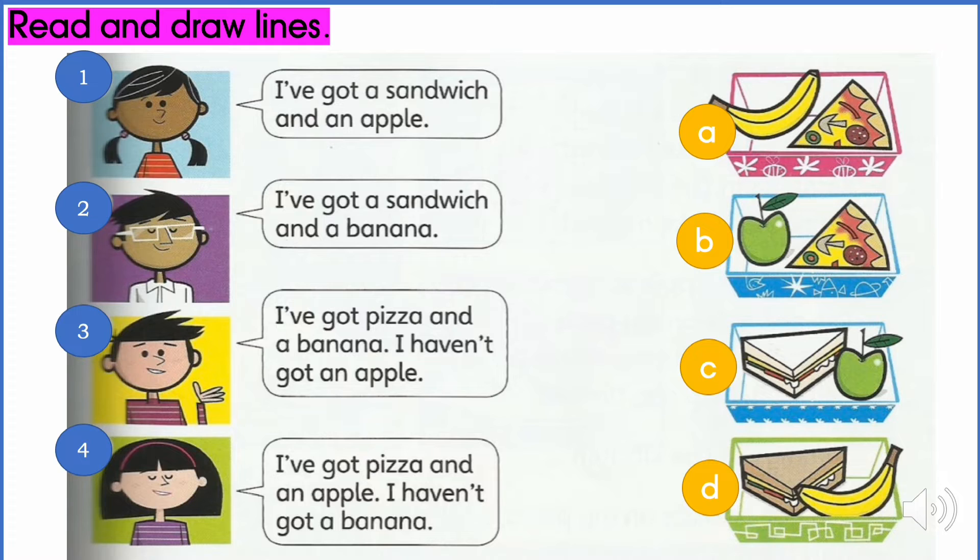Now let's do some exercises. Read and draw lines. Number one. I've got a sandwich and an apple. Which one is it? Is it A, B, C or D? That's correct. It's C. So you draw the line to C.